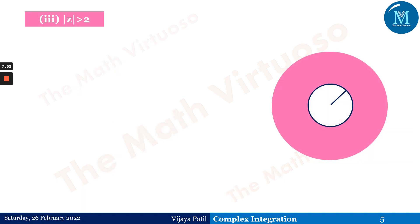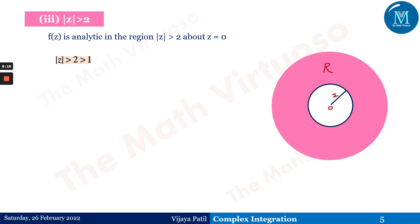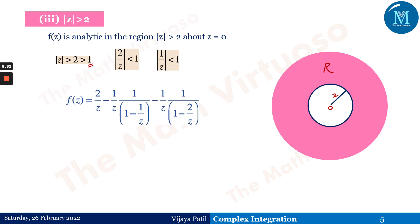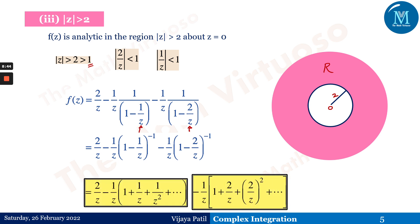For Region 3, |z| > 2: all points outside the circle of radius 2 centered at origin. The function is analytic here about z = 0. Since |z| > 2 > 1, both |1/z| < 1 and |2/z| < 1. We adjust the second factor using 1/z and the third factor using 2/z, obtaining the Laurent expansion for the region |z| > 2.